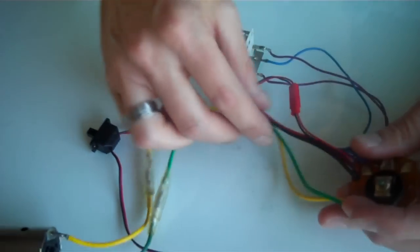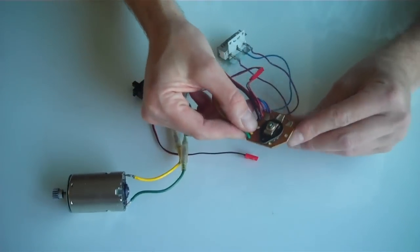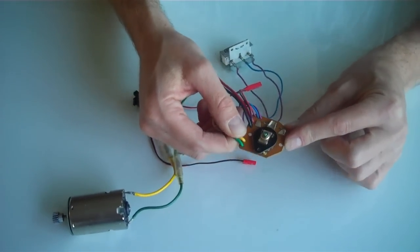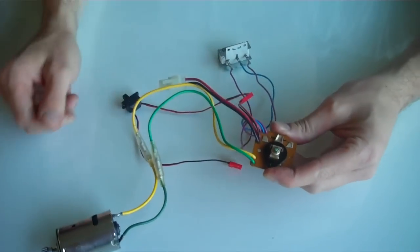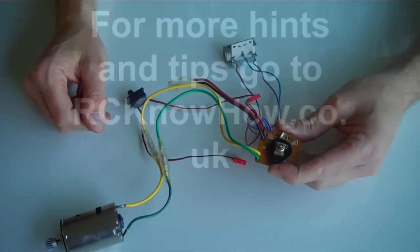And there we have it. That's the wiring done for the mechanical speed controller. Then you would now fit that into your model. Connect it up with a rod to your servo and it's ready to work. There we go. Thank you very much for watching.